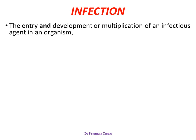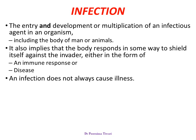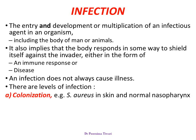An infection is called when the infectious agent enters and develops, or enters and multiplies, or both, inside the body of a living being. Once an infection occurs, the body responds in some way to it — it may be in the form of an immune response or the body may become diseased. But an infection does not always result in illness; the body may be able to fight off the infection and keep it in check, with no clinical illness resulting. There are various levels of infection, starting from colonization. For example, Staph aureus can colonize the skin and lives in normal flora also, remaining at the surface.